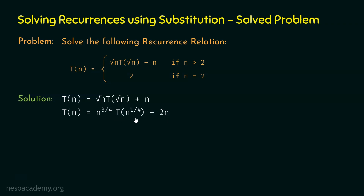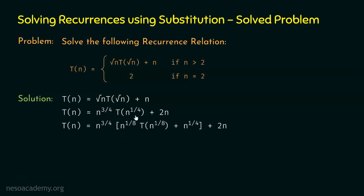Now let's substitute T(n^(1/4)). Since √(n^(1/4)) = n^(1/4 × 1/2) = n^(1/8), we write T(n^(1/4)) = n^(1/8) · T(n^(1/8)) + n^(1/4), because n is replaced by n^(1/4). So T(n) = n^(3/4) · [n^(1/8) · T(n^(1/8)) + n^(1/4)] + 2n.